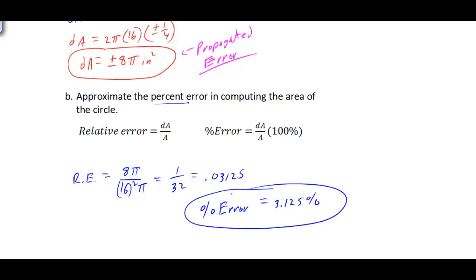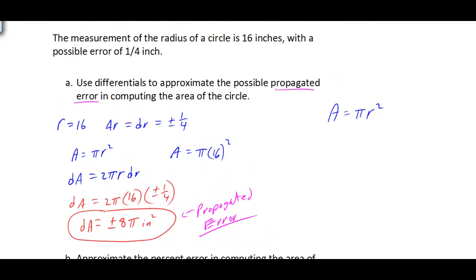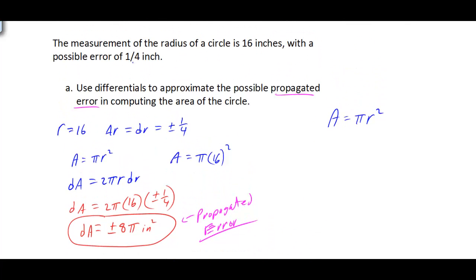This gives you the percent error when computing the area of the circle, given a possible error of a quarter of an inch when measuring the radius. That's it. Thank you.